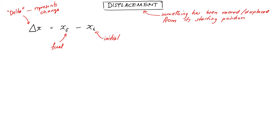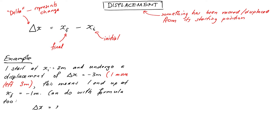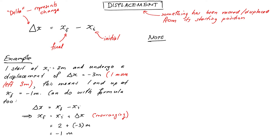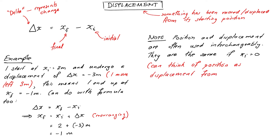Displacement indicates how far from the starting position you are: positive meaning to the right and negative meaning to the left. For example, if I start at an initial position xi of 2 meters and undergo a displacement of negative 3 meters, that means I shift left by 3 meters, which puts me at final position xf of negative 1. You can verify this with the formula: delta x = xf minus xi, rearranged gives xf = xi + delta x = 2 meters + (–3 meters) = –1 meter. Position and displacement are used almost interchangeably because they're essentially the same thing — they're exactly the same if the starting position is 0. It helps to think of position as a displacement from 0.